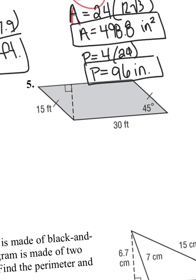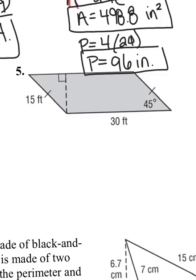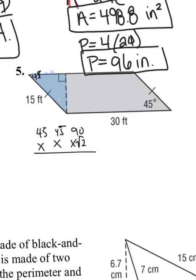Question number 5 — I see 45 degrees, which suggests a special right triangle. Focusing on the left triangle highlighted in blue to find the height of the parallelogram. If the bottom angle is 45, then the angle up top is also 45, giving a 45-45-90 triangle. The proportions are x, x, x√2, and they gave me that across from the right angle is 15, so x√2 equals 15.